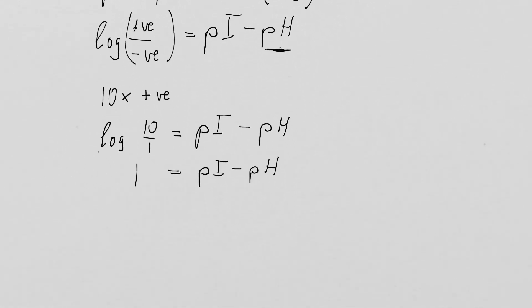So that is 1 equals pI minus pH, which means that in this case our pH must be pI minus 1. So the pH is smaller than the pI. In this case our protein is predominantly positively charged.